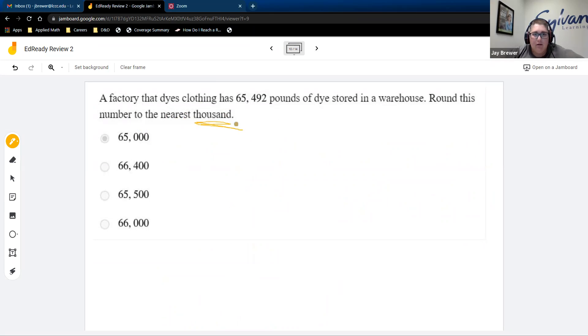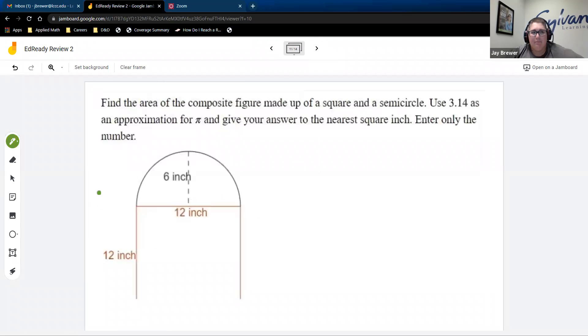Okay. This one, again, a lot of people had issues with rounding. So you're rounding to the nearest thousand. So you want to look at the number in the hundreds place. In this case, it's a 4. So you're going to stay with 65,000. Okay. And if we're going a little too fast in the video, it's just because I know it's on a recording and you guys can pause it as you work through a little bit later.